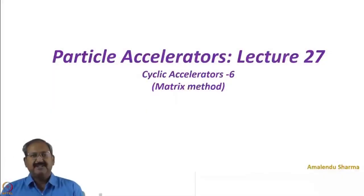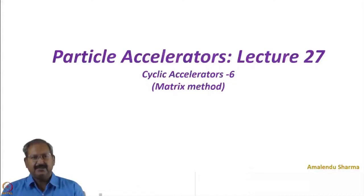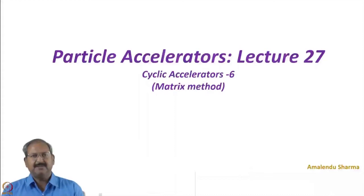In the previous lecture, we derived the equation of motion with reference to the design trajectory — how particles travel at a displacement with respect to the design trajectory, with both trajectories making an angle to it. This equation of motion was derived under dipolar magnetic field, meaning a constant magnetic field over space, and quadrupolar magnetic field, meaning a field with some gradient in space. Under these magnetic field configurations, we obtained the equation of motion as a second-order differential equation.